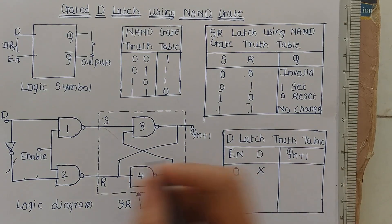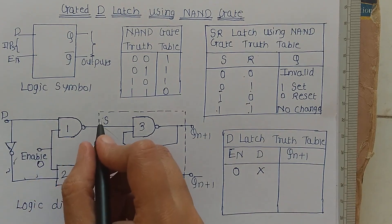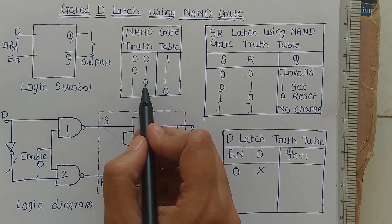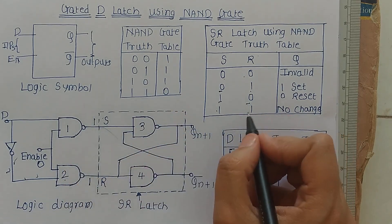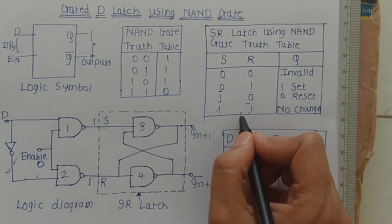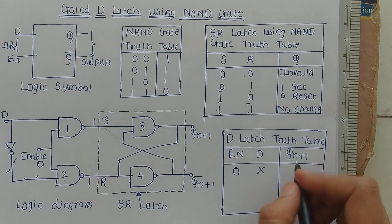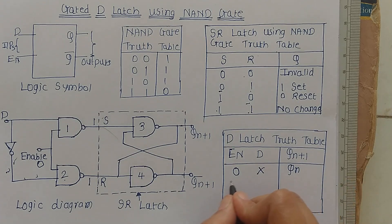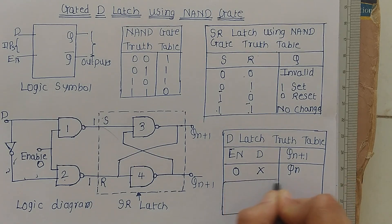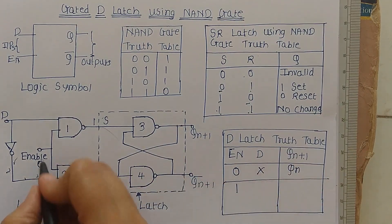Now let us first make the enable zero. Whatever the D input is, it does not matter. When enable is zero, as per the NAND gate truth table, if any one input to a NAND gate is zero, its output is one. So S and R both become one. From the SR latch truth table, when S equals one and R equals one there is no change — the next state Q(n+1) is the same as the present state. So when enable is zero, the latch holds its state.